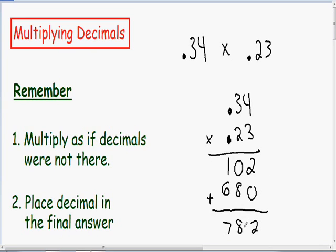So now in our final answer we need to go back to our original problem and count how many numbers are to the right of the decimal. In our first number 0.34 we have two numbers to the right of the decimal. In our second number 0.23 we also have two numbers to the right of the decimal. So we have a total of four numbers that are to the right of the decimal points. So in our final answer we also need four numbers to the right of the decimal point.